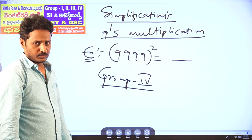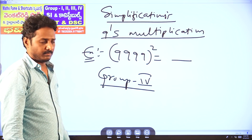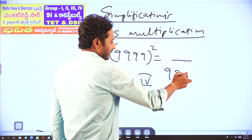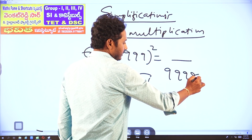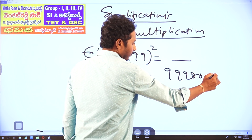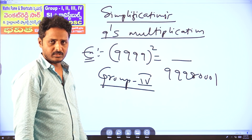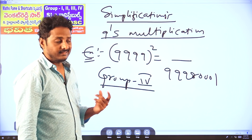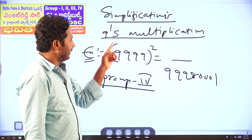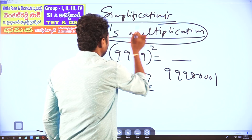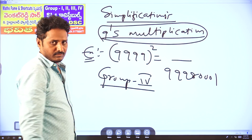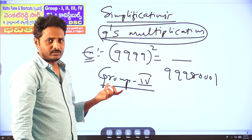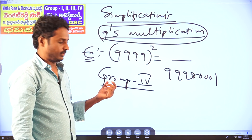Here is the question. The answer to this question — if you have the question double 9, double 9, whole square equal to what, Group 4 question — the answer is 10001. Nines multiplication — nines will be easy to know. Everyone can solve nines multiplications once we learn the pattern.